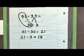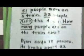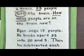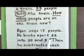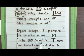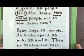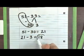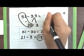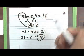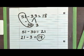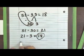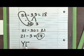Let's look back at what we have. It said Ryan says 18 people — he broke apart 33 into 30 and 3, which is what we did, then he subtracted each number, which we also did. Does his reasoning make sense? We got an answer of 18, and we know our answer is correct. Ryan got the same correct answer and we followed his steps. So the answer would be yes.